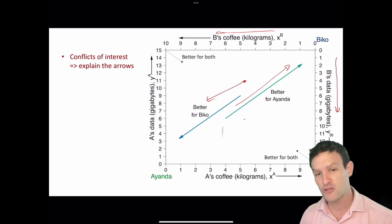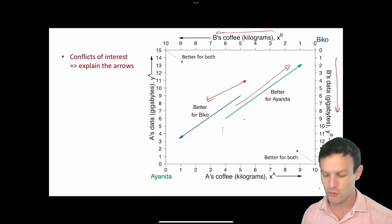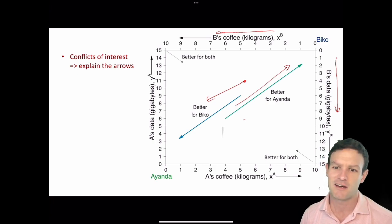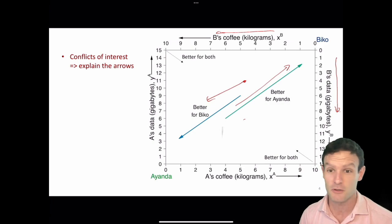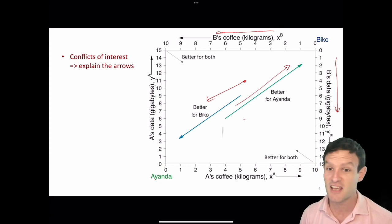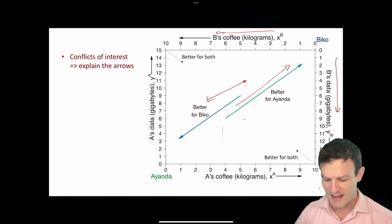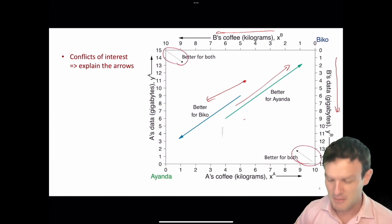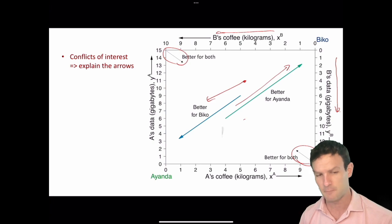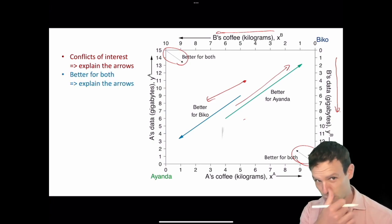However, there are certain directions which are actually better for both of them. Because both people have diminishing marginal utility, they're willing to make trade-offs between the two goods to get more of one rather than the other. So they can engage in exchange for them both to do better — the arrows in the corners suggest there are opportunities for them both to do better by exchanging goods with each other.